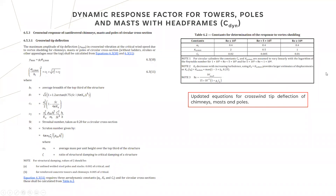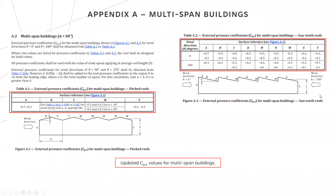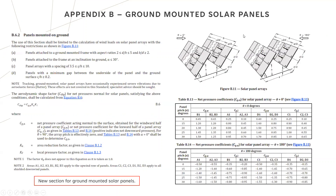Further information is provided for determining vortex shedding requirements, Reynolds numbers, and those kinds of things. In Appendix A for multi-span buildings, the C_pe factors have been adjusted slightly, particularly the A_y value for both sawtooth and pitched roofs. Most values are about the same, but the general changes involve adding a second case where there may have previously only been one. The other significant change is the introduction of ground-mounted solar panels, which did not exist in the previous version of the standard.